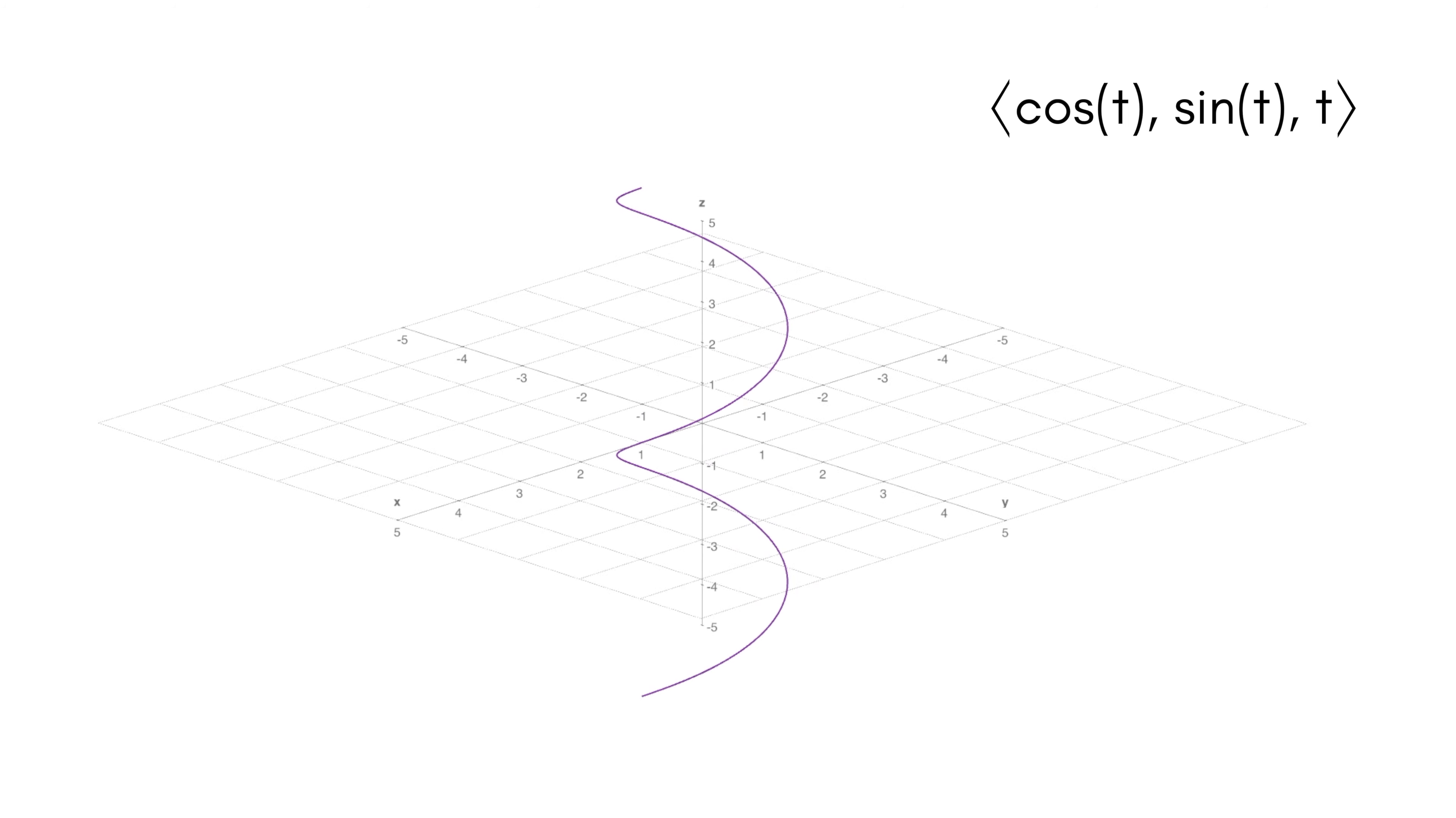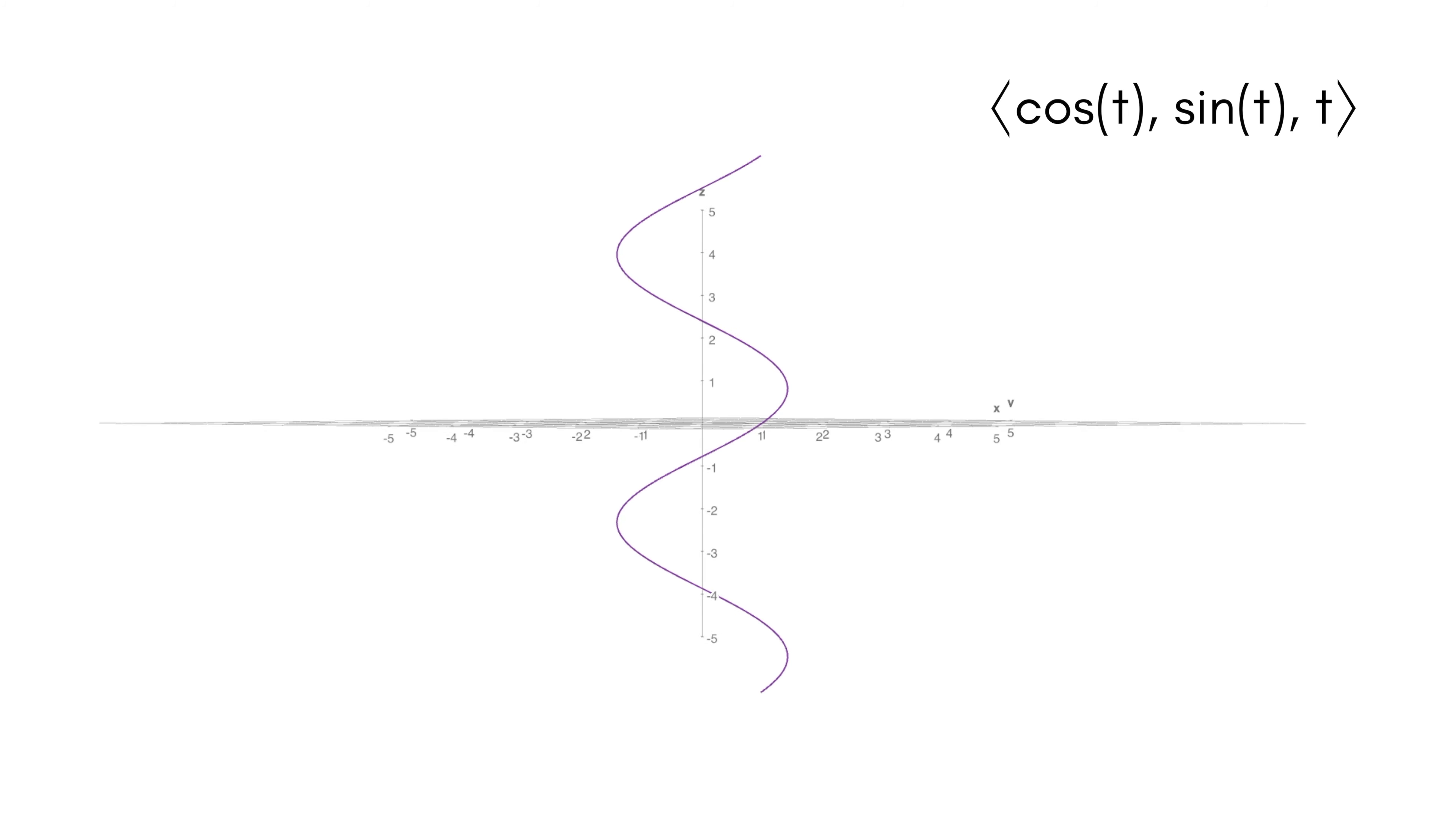So if we ignore the y-axis and we just look at the x and z, z is just the function t. So whatever t is, it's just giving us that t value. But then x is cosine of t. So that's why we're seeing this cosine graph here.